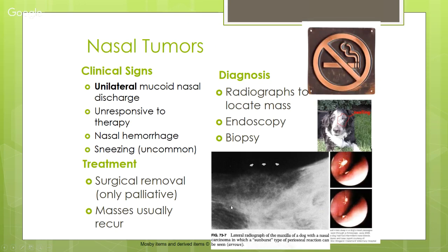On x-ray you can see a mass within the bone that's eating away at the bone — that blackness within where bone should be is called lysis. The tumor is composed of bone and probably cartilage tissue and is most likely a nasal carcinoma, which can be very destructive within the nasal cavity.